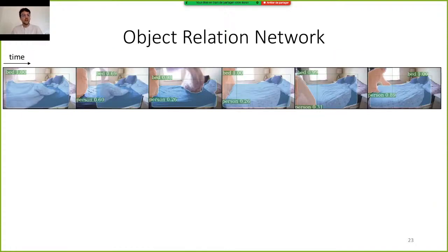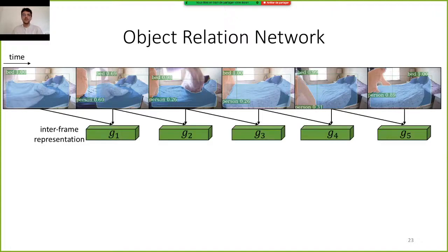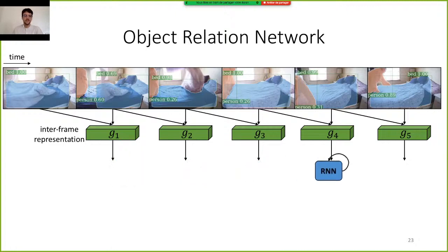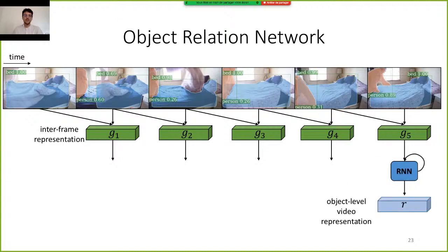However, videos are not composed of only two frames, and we need to incorporate long-term representation. For incorporating those long-range dependencies, we run an RNN on top of the sequence of inter-frame object interactions, and use the final hidden state of this RNN for classification. For training our model, we use the cross-entropy loss.